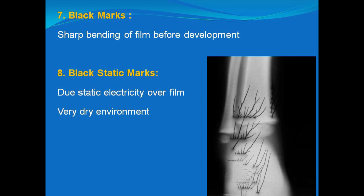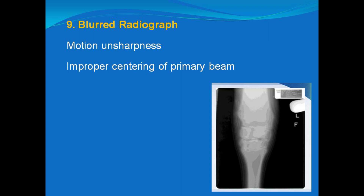Black marks can arise due to sharp bending of the film before development. Black static marks are caused by static electricity over the film — this happens particularly when temperature is quite high, especially in summer, and humidity is low. We should try to keep the storage container at optimum conditions to remove this problem.